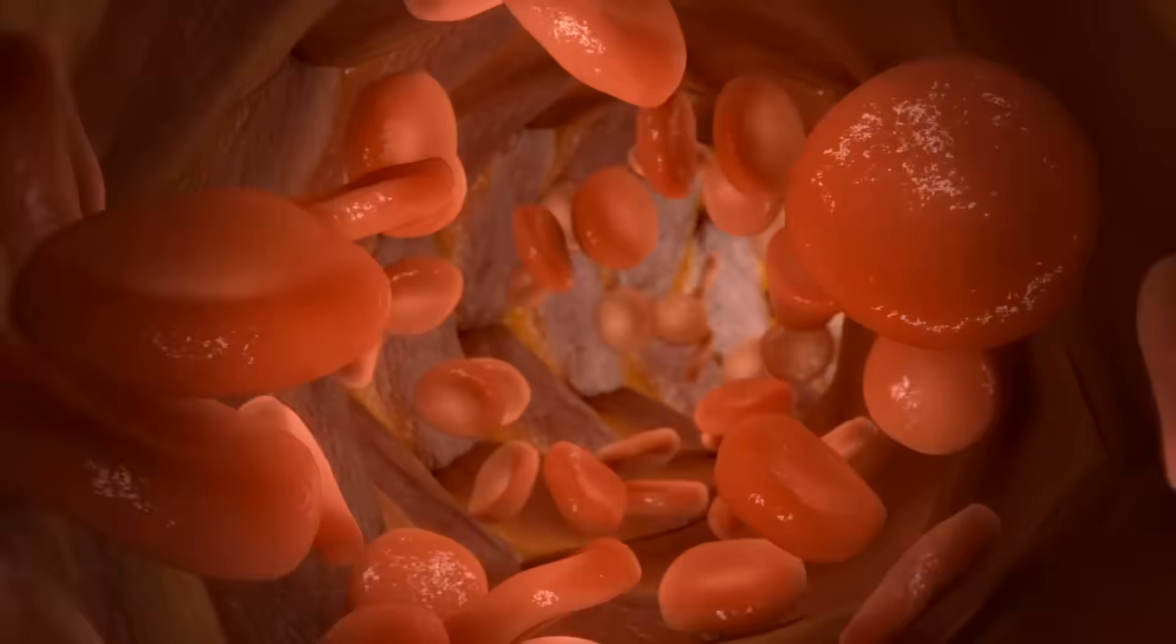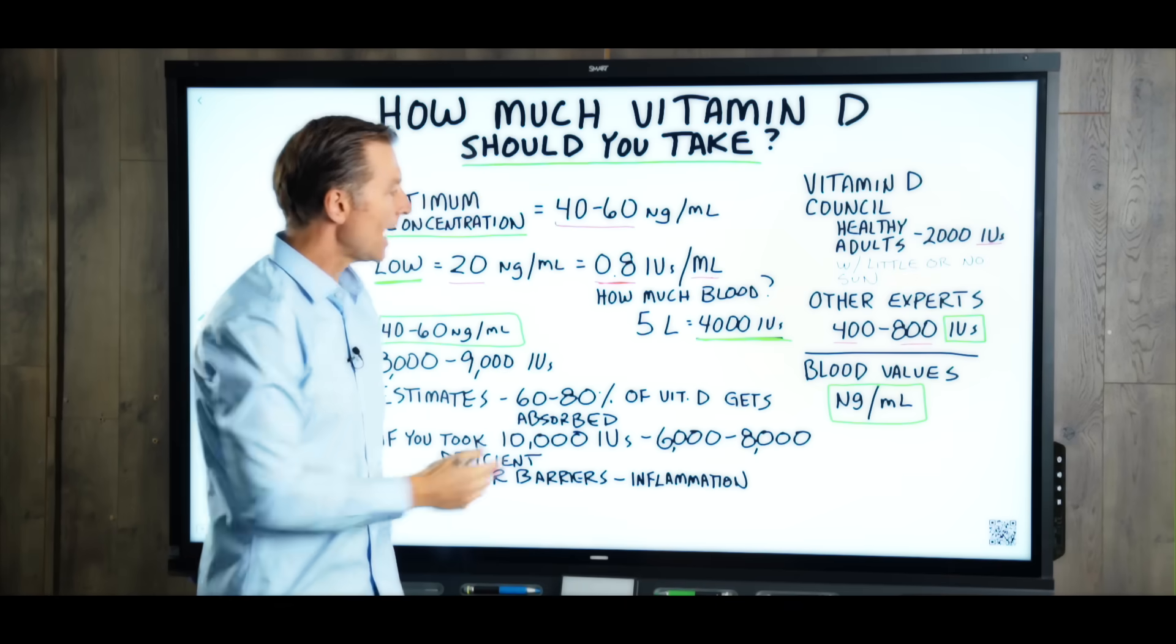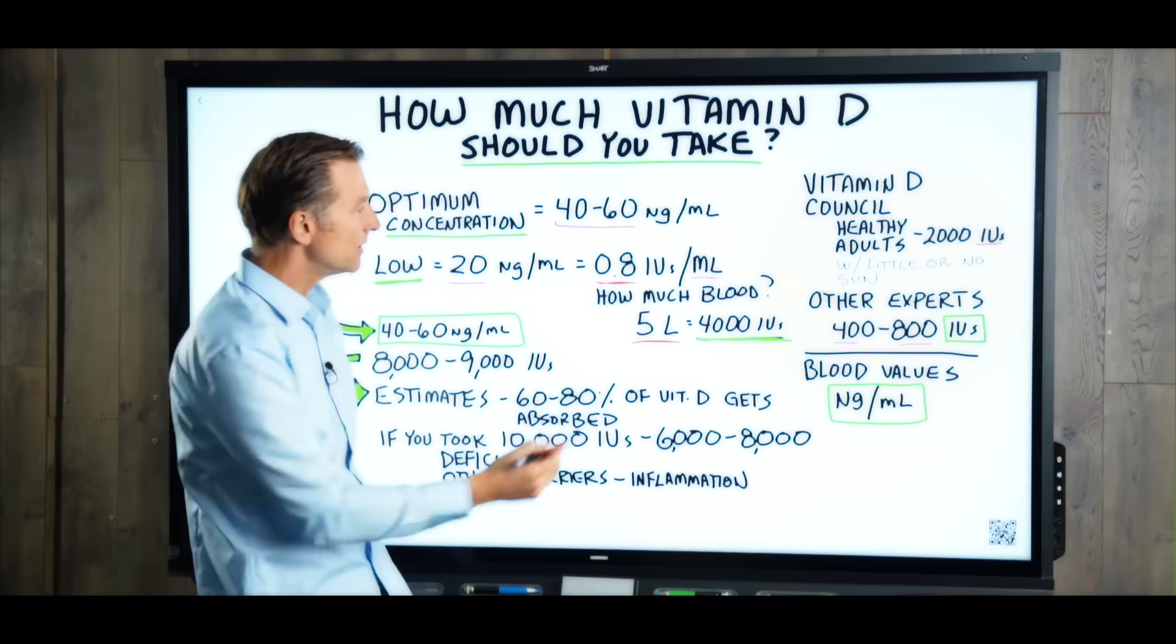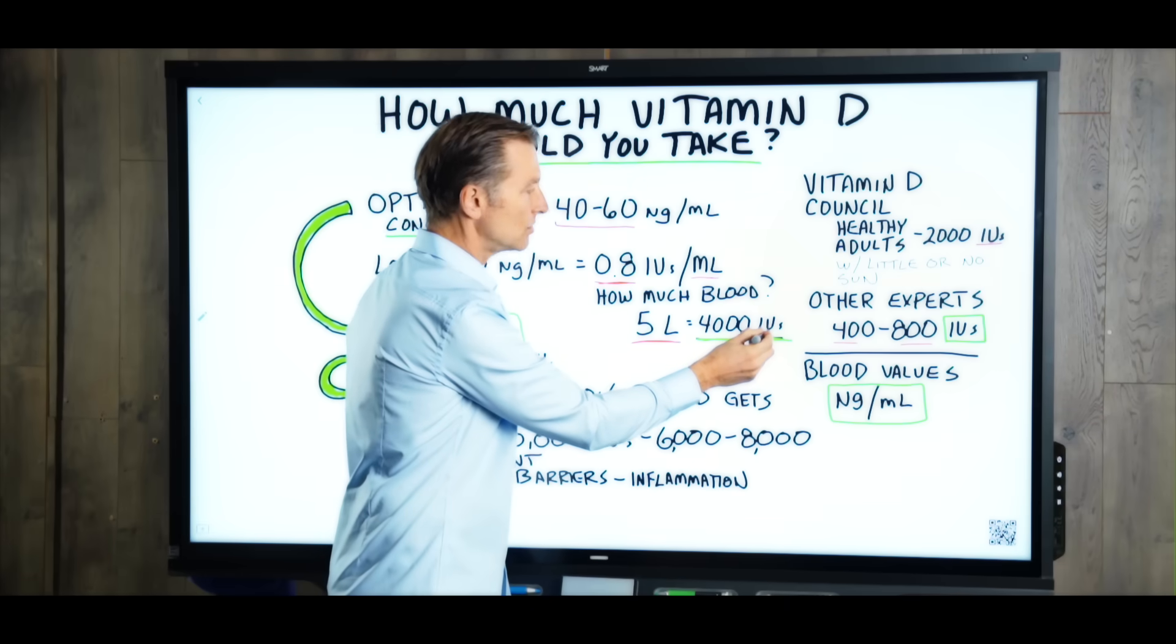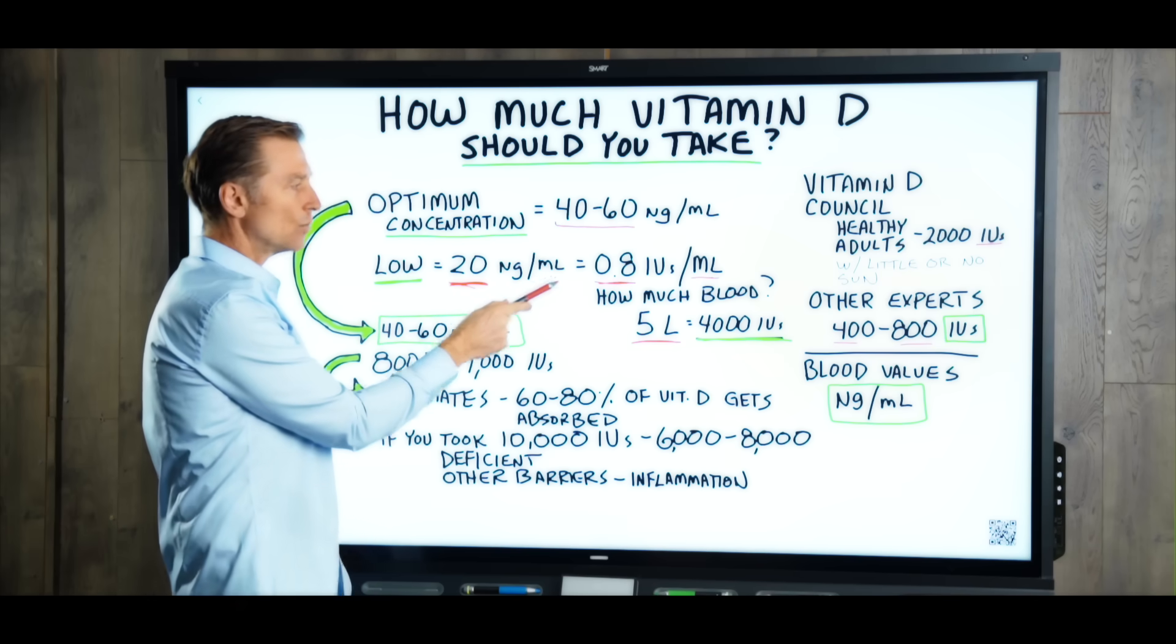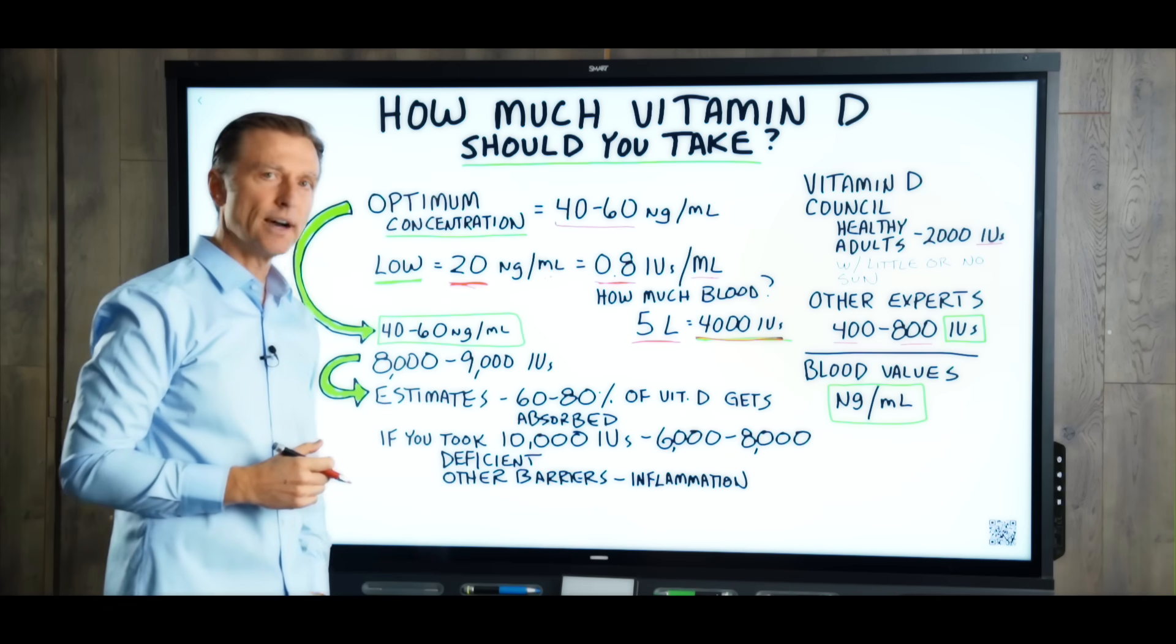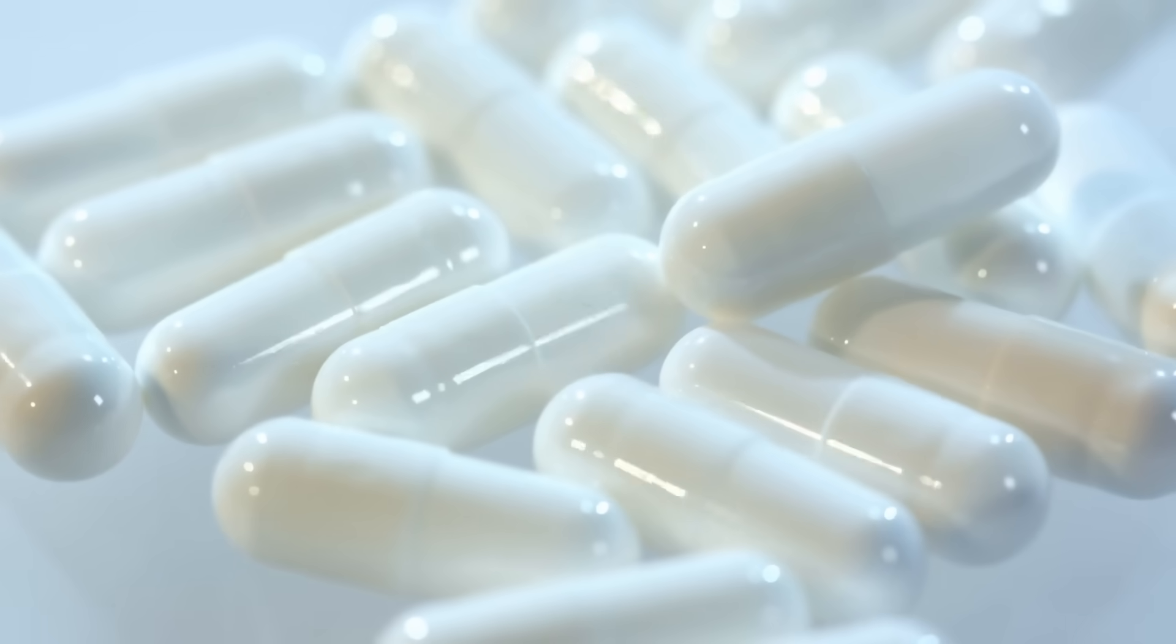So we have about 5 liters of blood in the average size person. And that would give us, if we do the math, 4,000 international units of vitamin D. So people that are deficient, that have only 20 NGs per milliliter, really have about 4,000 international units of vitamin D, which is actually greater than what is recommended.